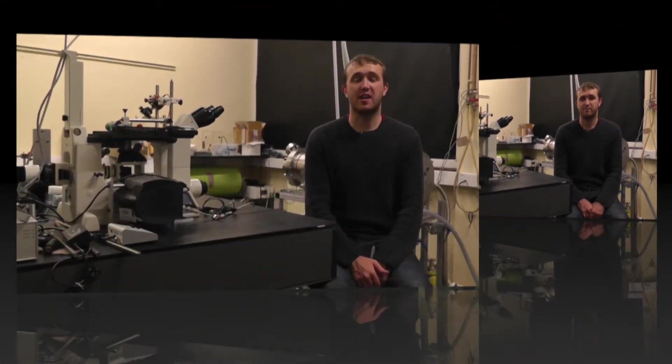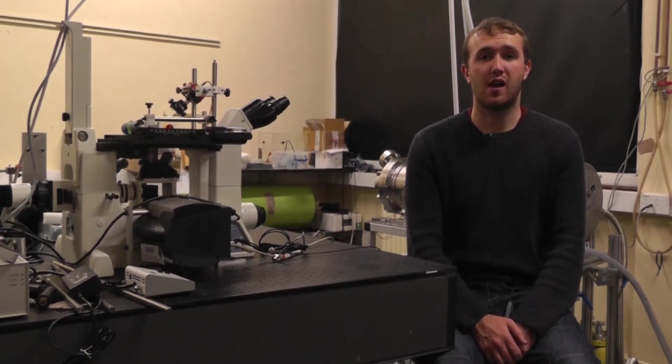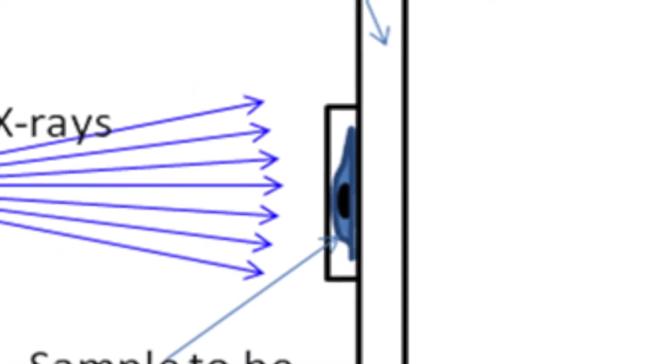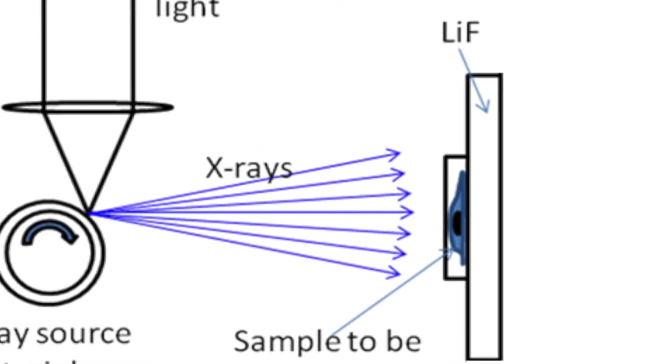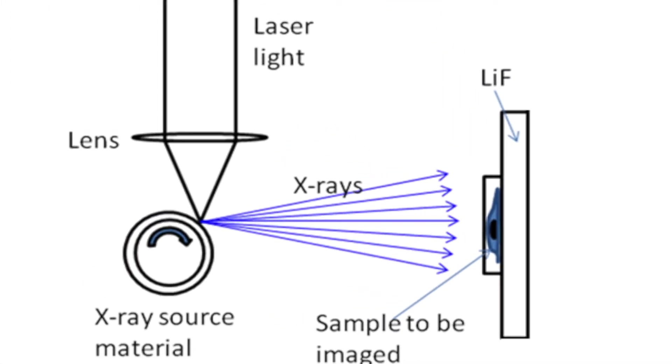Once I have the soft X-rays required, I can then use them for imaging. I should be doing this using a process known as contact microscopy. This is where the sample is directly in contact with the detector.